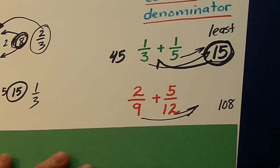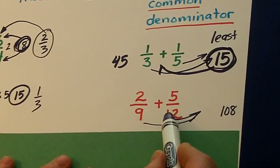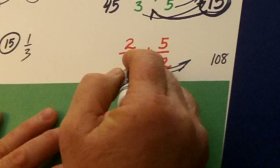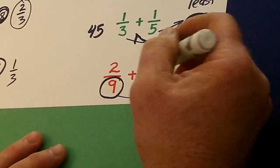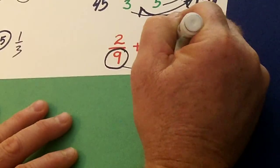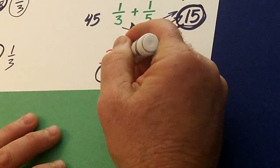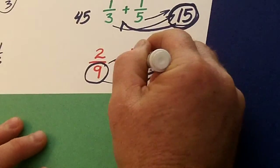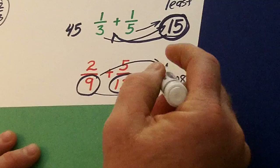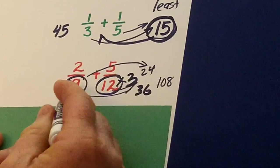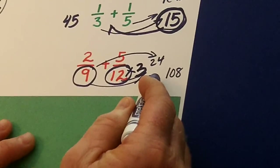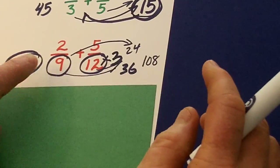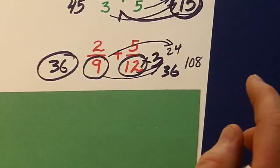Here's a little trick: if the smallest one does not directly go into the biggest one — if 9 cannot go into 12 — double the 12 and we get 24. Can 9 go into 24? No. So then we triple the big number. What's 12 times 3? 36. Can 9 go into 36? Yes. 36 is the least common denominator of 9 and 12.